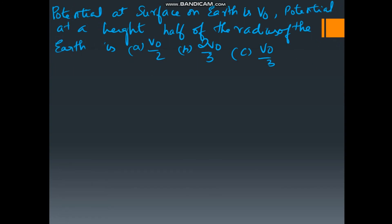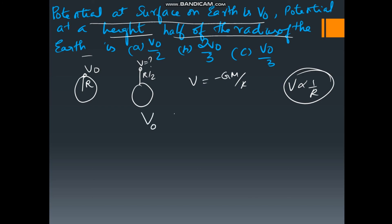Now, let us do the next numerical. Potential at surface of the earth is V naught. So this is the radius of the earth at surface V naught. What is the potential at height half of the radius of the earth? So at a distance R by 2 from the surface of earth, what is the potential they are asking? So we know that potential is equal to minus GM by R, where potential is inversely proportional to R.